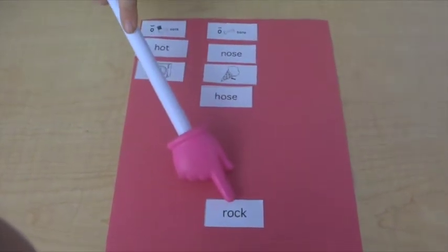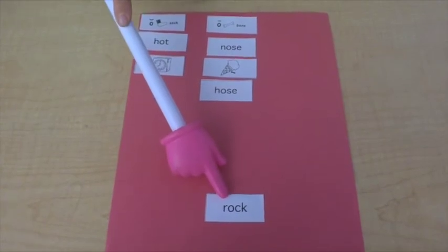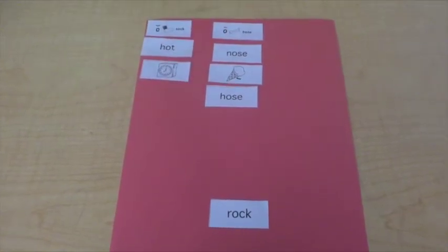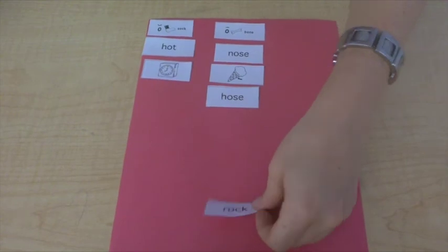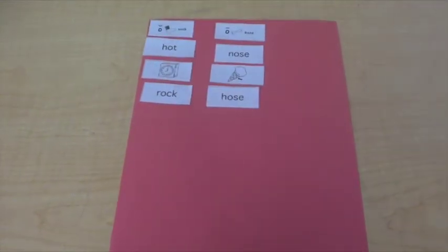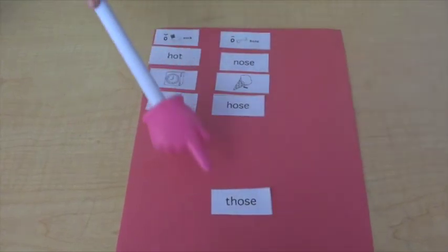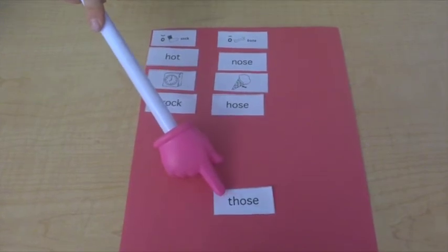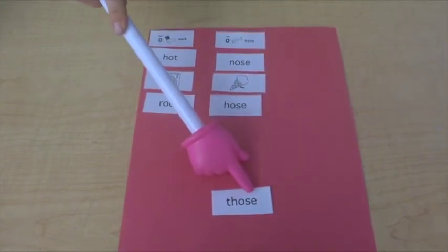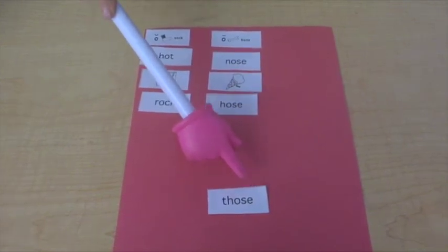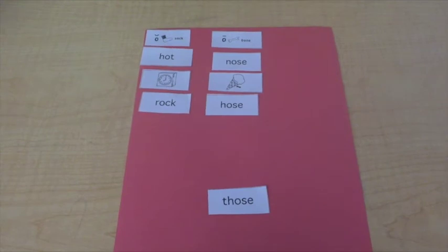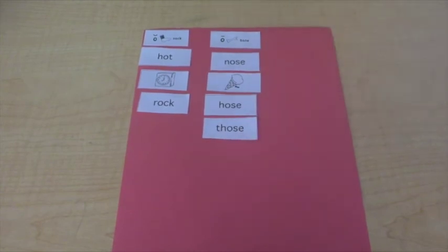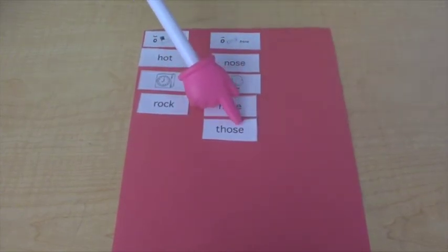This word is rock. Tell me the sounds of rock. R-O-K. Rock. Do you hear ah or oh? Yeah, we hear ah. So rock goes in our first column. This is the word those. Say those. Tell me the sounds of those. TH-O-S. Those. Do you hear ah or oh in those? Yeah, we hear oh. So those goes in the oh column because of that E at the end.